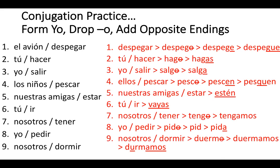For practice, remember: all subjunctive verbs — form the yo, drop the o, add the opposite ending. Number three: yo and 'salir' — the yo form of salir is 'salgo,' drop the o, salir was an IR verb so we use AR endings. 'Salgo' becomes 'salga.' Similarly for 'tú' and 'hacer': the yo form of hacer is 'hago,' drop the o; hacer is an ER verb so instead of adding ES we add AS for the tú subjunctive — you get 'hagas.'